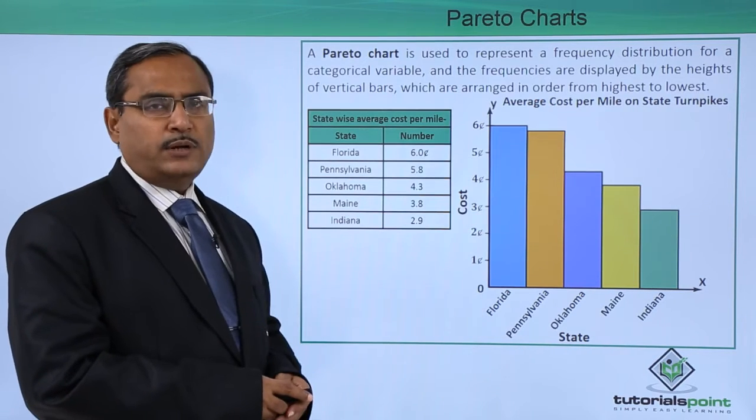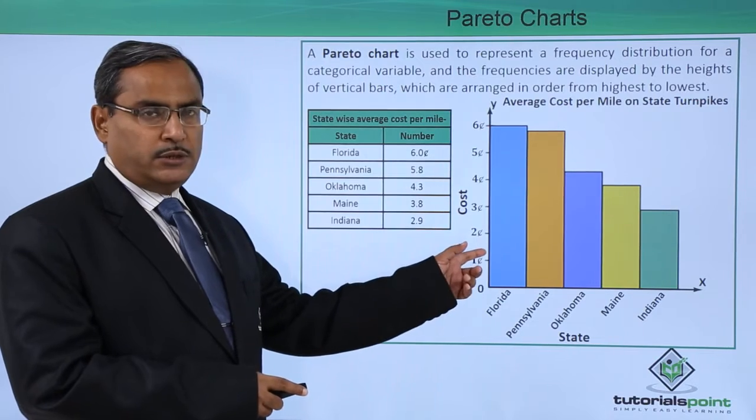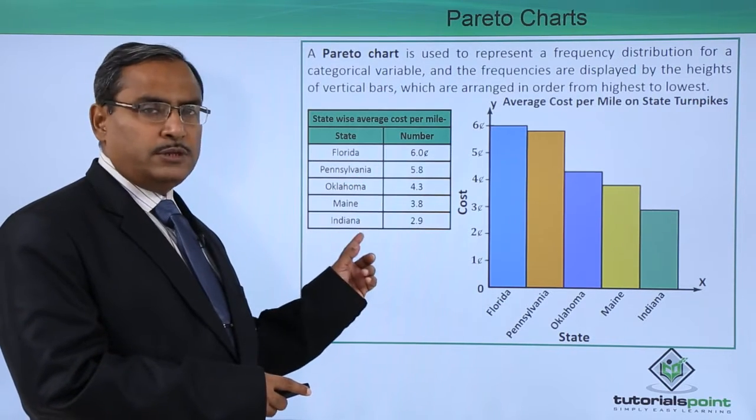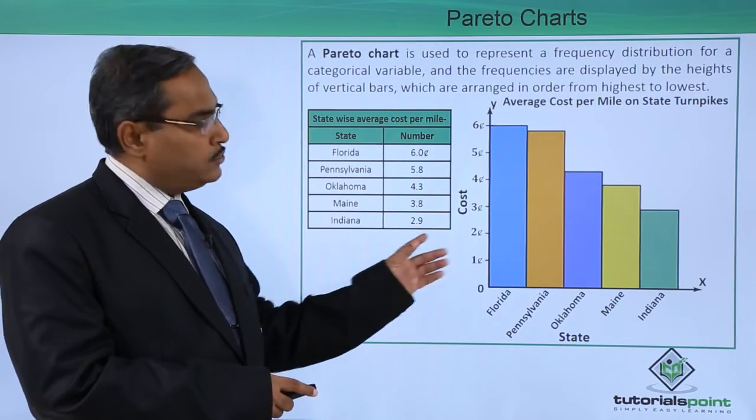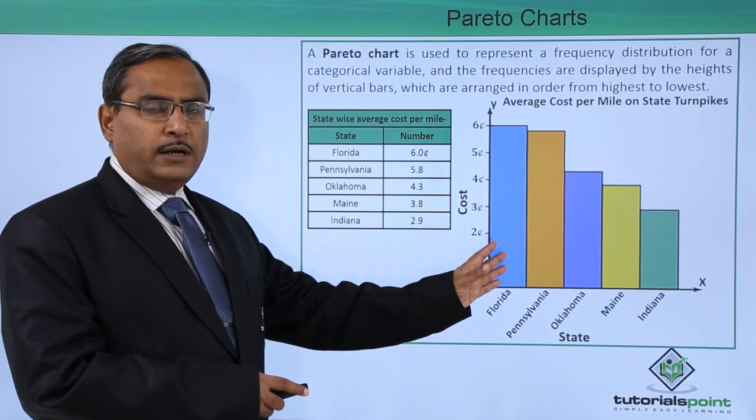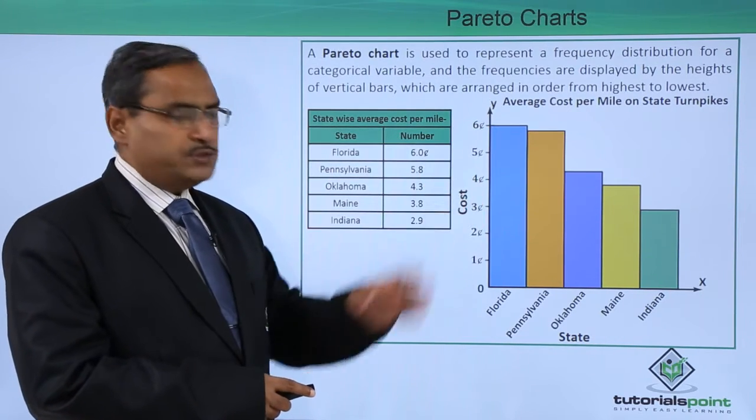This graph is known as the Pareto chart, and this Pareto chart will be having the categorical values and the respective numerical values plotted from the largest value to the smallest one.